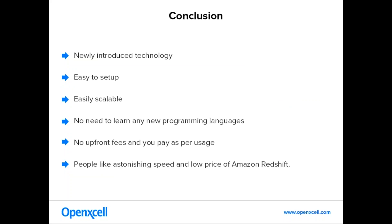In conclusion, Amazon Redshift is a newly introduced technology launched in late 2012. It is very easy to set up, can be easily scaled, and no need to learn any new programming languages. There are no upfront fees — pay as per usage. People love its astonishing speed and low price. This is just an introduction to the Amazon Redshift data warehouse solution. You can get started from its official website at aws.amazon.com. Thank you everyone.